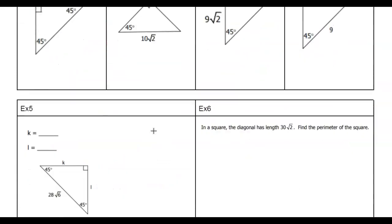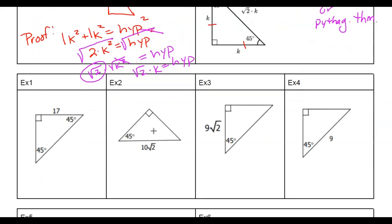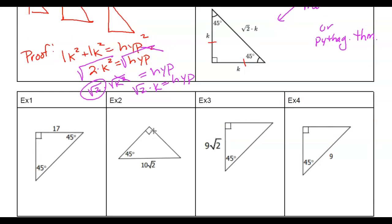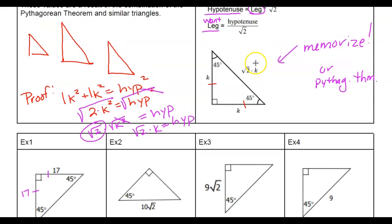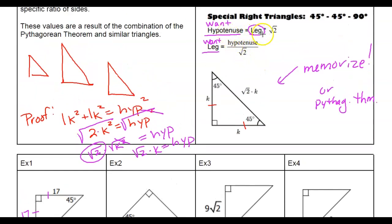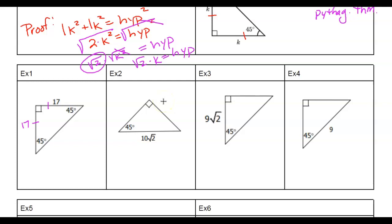I have six examples here. Let's look at example one. I know these are the two sides — if that's 17, I know this is 17 as well. This is like k, k, k times root 2. So if we want the hypotenuse, we take whatever the leg is times root 2. So 17 times root 2 — that doesn't simplify. If you're typing this in on a quiz, you'll type 17 root 2.